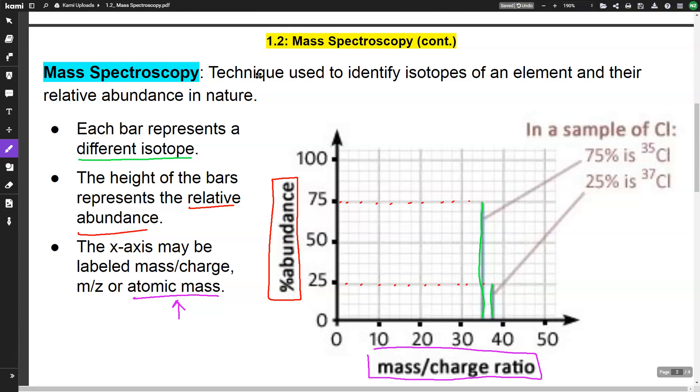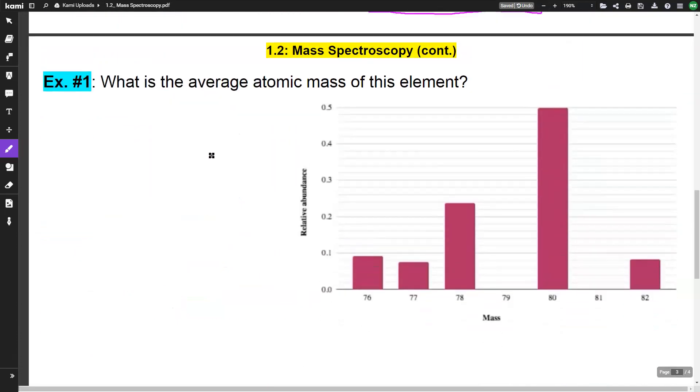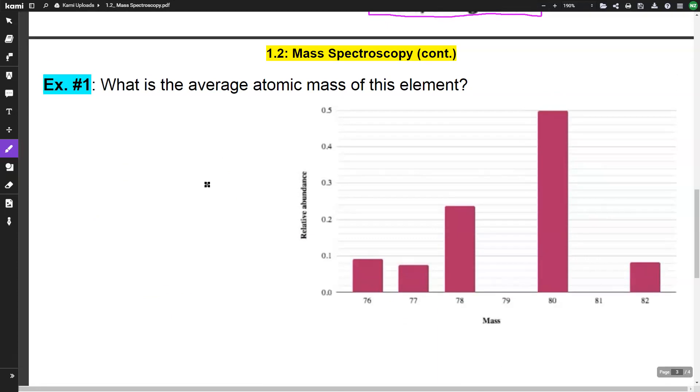So let's look at an example. It says, what is the average atomic mass of this element? And we've got a bar graph here. So the way we approach this is we are going to take every single bar. So we've got 76, 77, 78, 80, and 82. So we have five different isotopes.